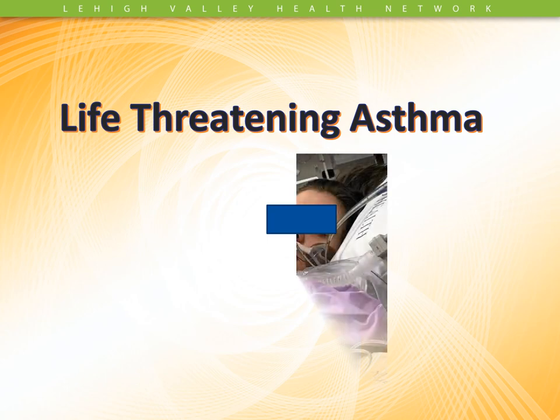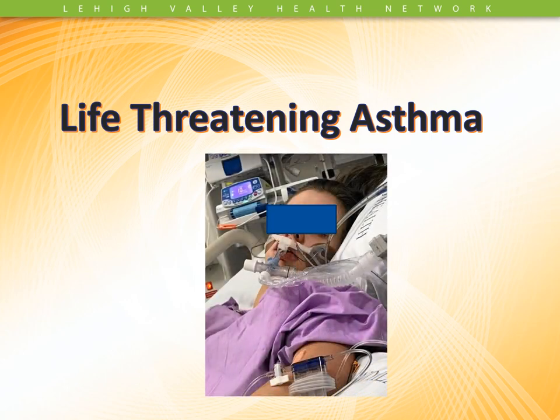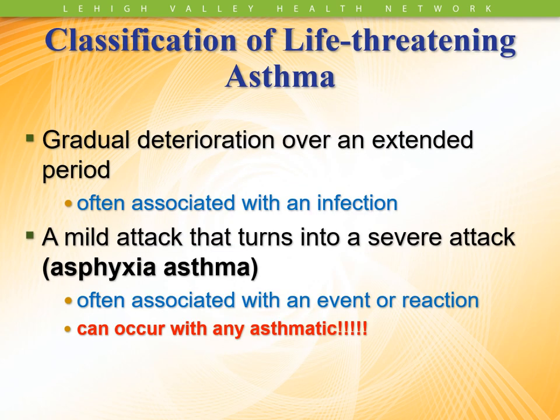In life-threatening asthma, with a patient on a ventilator with asthma, it's really a classification — as I said earlier, it can be gradual deterioration over an extended period of time, usually associated with infection. Or it could be a mild attack that turns into a severe attack, often called asphyxic asthma. These are the patients that unfortunately often die at home, on the way to the hospital, or in the emergency room.